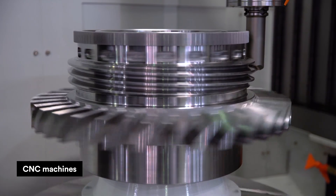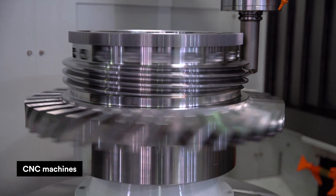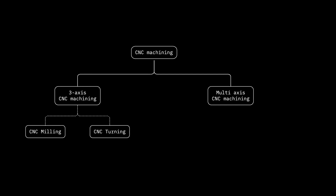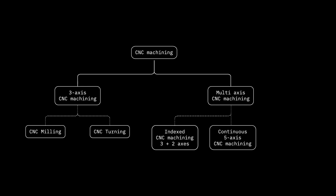CNC machines can be broken up into two main categories: 3-axis CNC machines and multi-axis CNC machines. 3-axis machines are CNC milling or CNC turning machines, also known as lathes. The multi-axis CNC machines can be indexed CNC machines, continuous 5-axis CNC machines, and mill-turning machines.